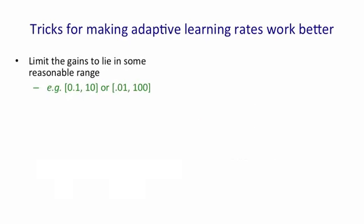There's a number of tricks for making the adaptive learning rates work better. It's important to limit the size of the gains. A reasonable range is 0.1 to 10 or 0.01 to 100. You don't want the gains to get huge, because then you can easily get into an instability and they won't die down fast enough and you'll destroy all the weights.